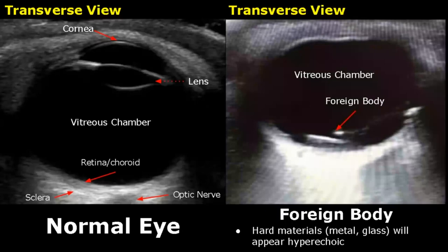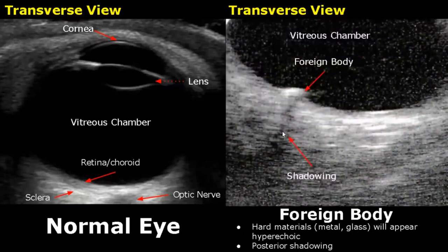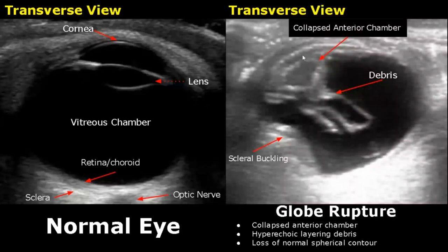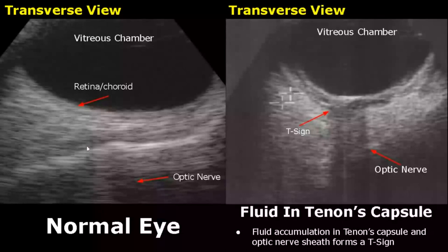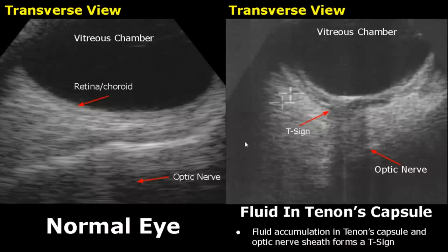Ultrasound is helpful in visualizing ocular foreign bodies. Hard materials such as glass or metal will appear hyperechoic. Denser material will have posterior acoustic shadowing. In a globe rupture the anterior chamber can be collapsed. Hyperechoic layering debris is present and there is loss of normal spherical contour of the eye. Scleral buckling is seen, deforming the eye, and the volume of the globe will be reduced. Tenon's capsule is a dense layer of connective tissue surrounding the eyeball. If there is fluid accumulation in the Tenon's capsule and the optic nerve sheath, it will give a T-sign.